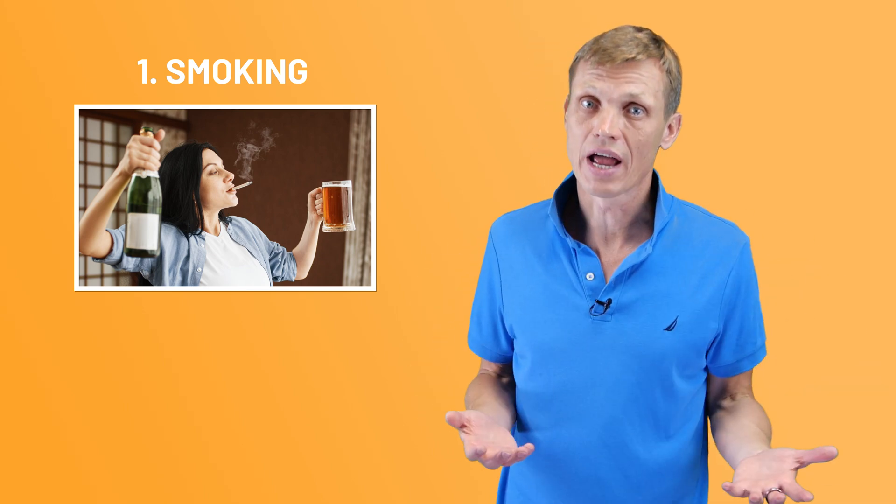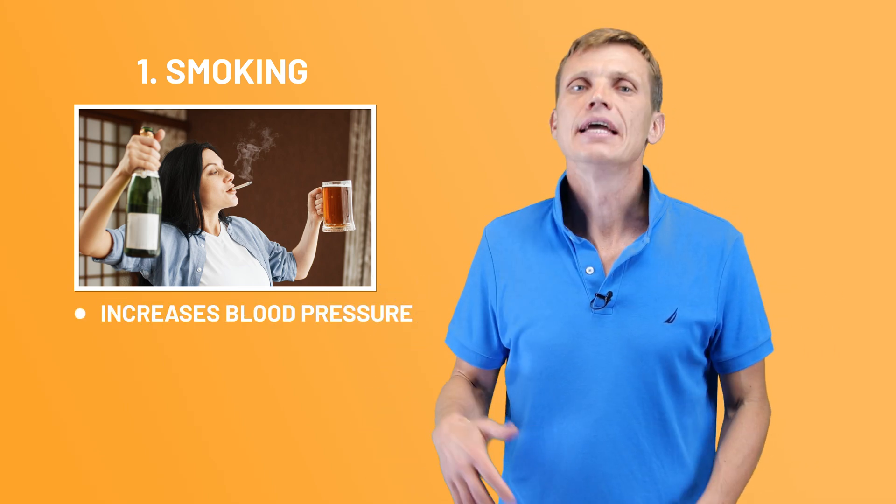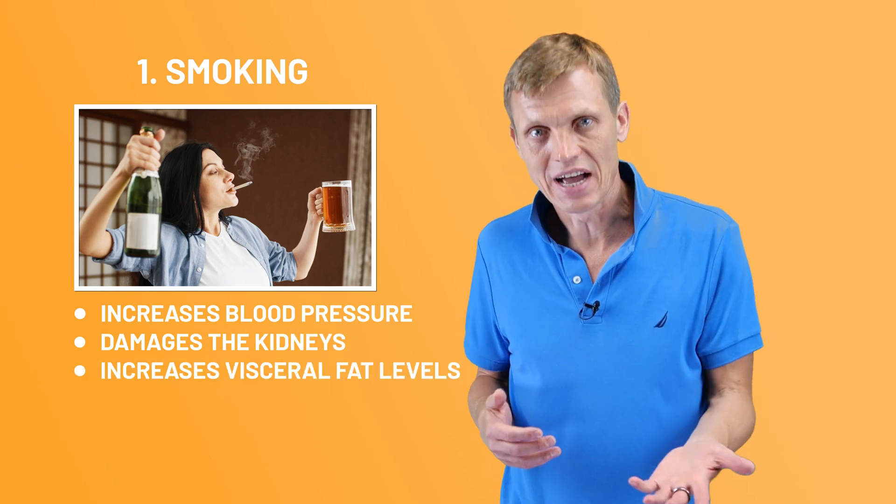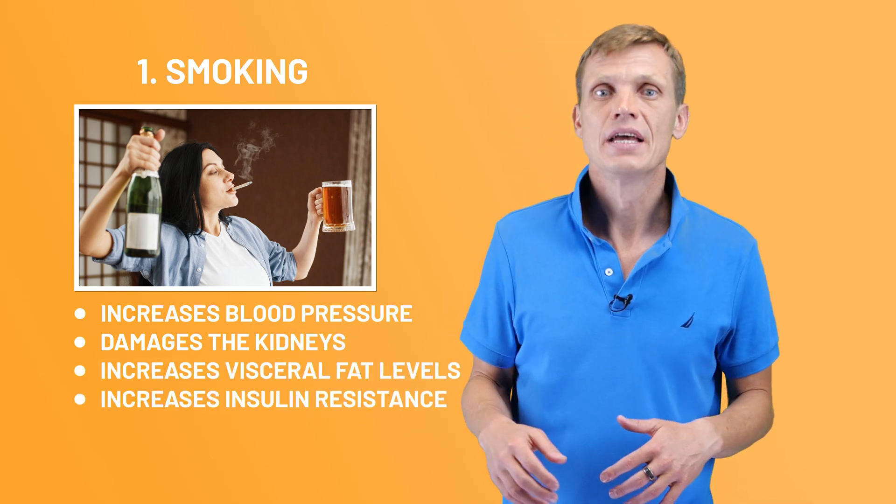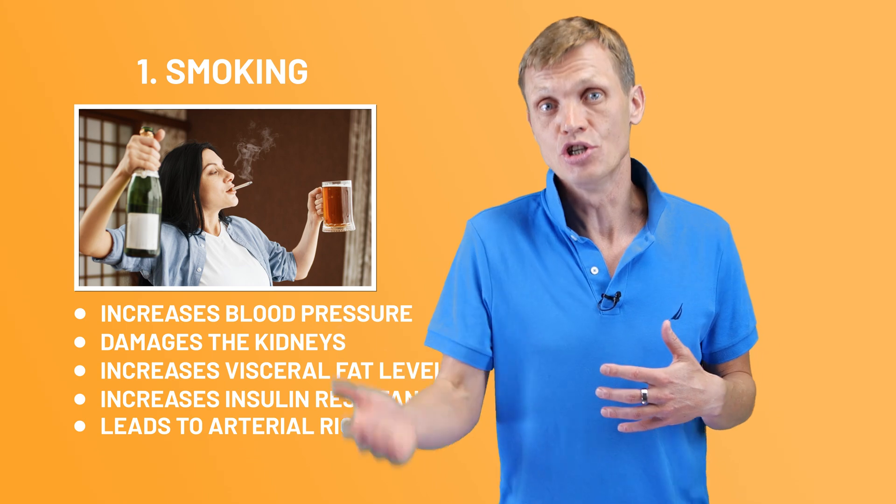So what changes can be made to reduce the risk of hypertension? There are several of them, and many people see results in as little as three days after implementing them. Number one is smoking. If you smoke, you should know that smoking possesses major risk for cardiovascular health. Nicotine acts as a vasopressor, meaning it causes blood vessels to contract and blood pressure to rise. It damages the kidneys, increases visceral fat levels, and leads to increased insulin resistance. It also releases catecholamines like dopamine and epinephrine, leading to arterial rigidity. Quitting smoking has been clinically proven to reduce BP in a short time. So, reducing nicotine intake or eliminating it from your routine altogether will do wonders for your blood pressure and cardiac health.